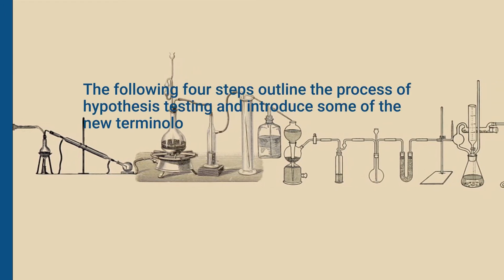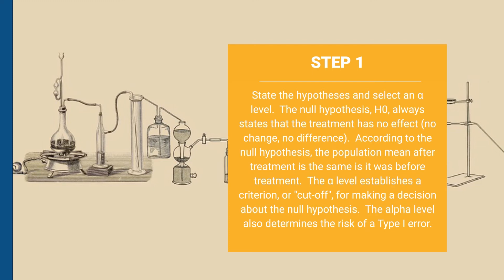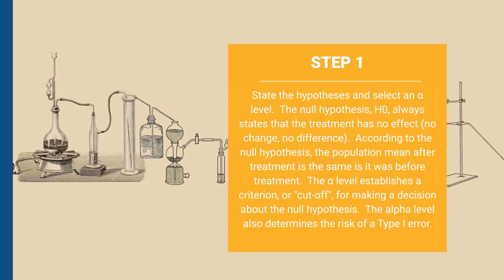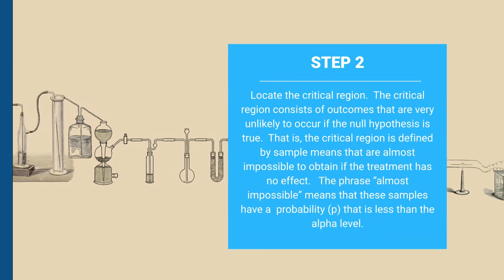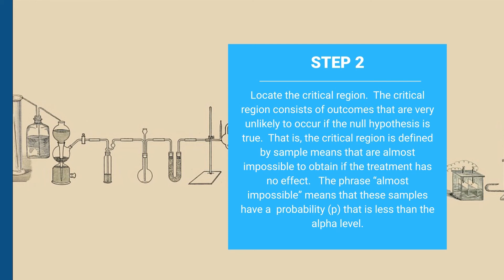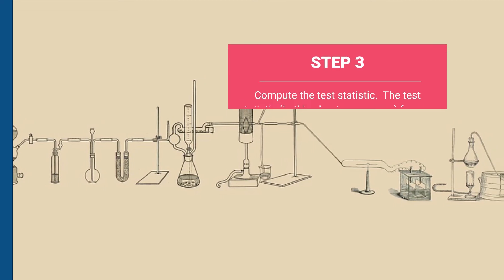The purpose of a hypothesis test is to decide between two explanations: the difference between sample and population is explained by sampling error, or it is too large to be explained by sampling error and there appears to be a treatment effect. Step 1: state the hypothesis — the null hypothesis always states the treatment has no effect. Step 2: select the alpha level, which establishes the criteria for making a decision and also determines the risk of a Type I error.